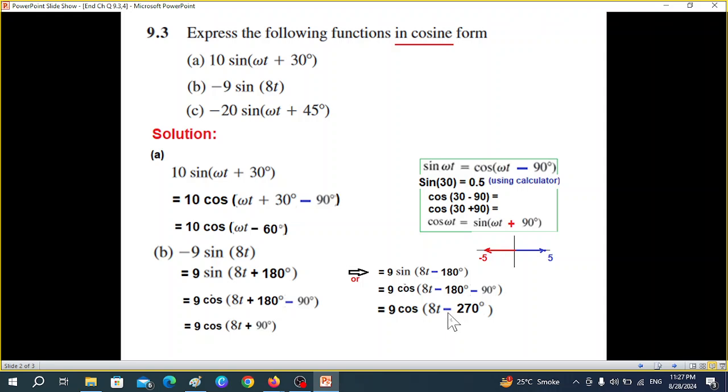You might ask, we have minus 270 here and plus 90 there—they are not same, but actually they are same. For that we have to remember this: if we add or subtract 360 degrees with any angle, the value does not change. So if we add 360 here, we get 8θ plus 90, or if we subtract 360 from here, we get 8θ minus 270. So these two are same.